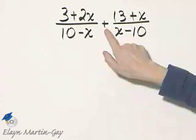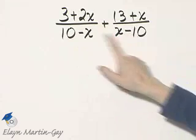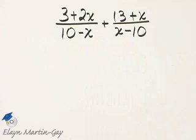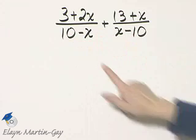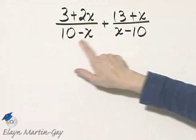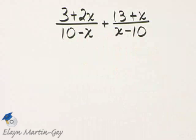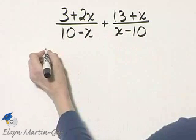Here the operation is addition. We can only add rational expressions if the denominators are exactly the same. Notice in this case they are opposites of each other, so we're going to take advantage of that.